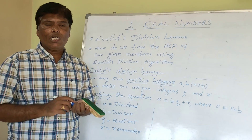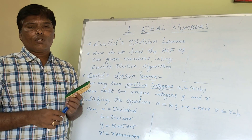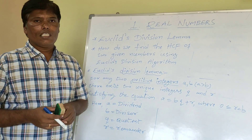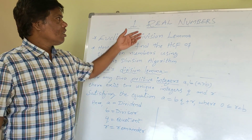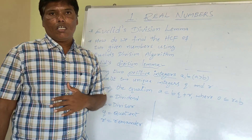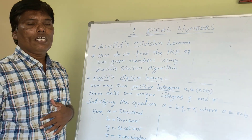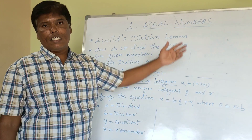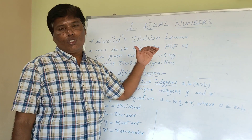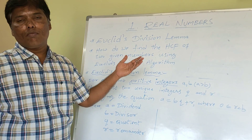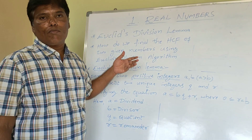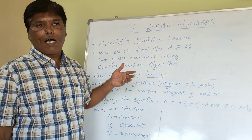Hi everyone, welcome to my YouTube channel. Without wasting our time, let's start our today's chapter. Today I am going to start the chapter Real Numbers from 10th class. Especially in this chapter, I am going to deal with two topics: the first topic is Euclid's Division Lemma and the second topic is Euclid's Division Algorithm. Using Euclid's Division Algorithm, we are going to find the HCF of two given positive integers.